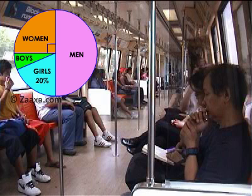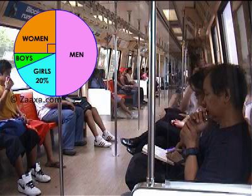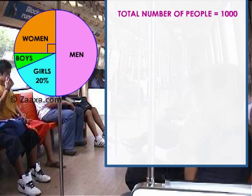Do you notice that the section for women makes a quarter of the circle? From this, we can say that women make a quarter of the people in the train. We can also conclude that there are more men in the train than women, boys or girls, and that there are fewer boys in the train than men, women or girls. These facts are obvious from the sizes of the sections representing the different categories. If we know that there are 1,000 people in the train altogether, it is possible for us to immediately tell that there are 500 men in the train.